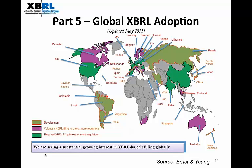Let's now look at global adoption of XBRL for regulatory purposes. There are three categories on the map: olive green represents countries developing regulatory applications; purple represents countries voluntarily filing to one or more regulators using XBRL; and green represents countries that are actively filing to one or more regulators.